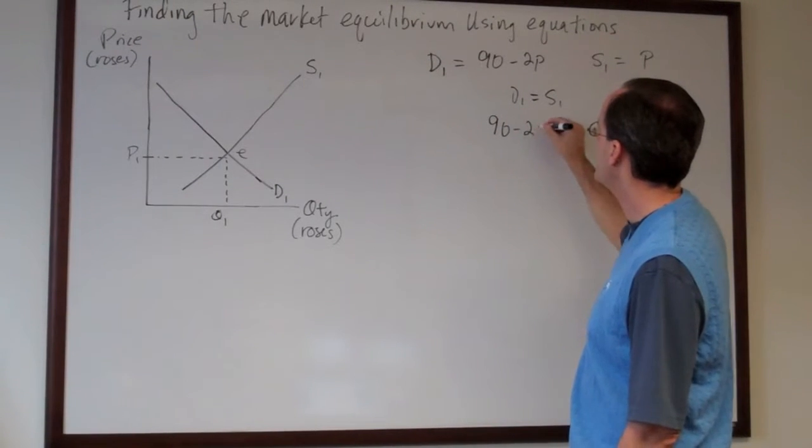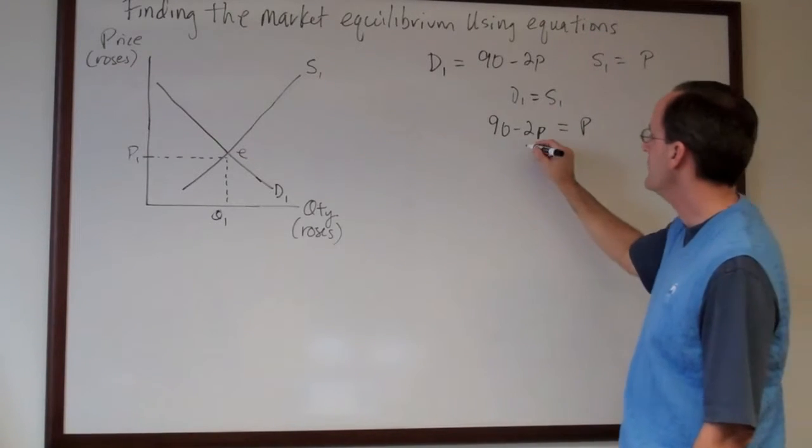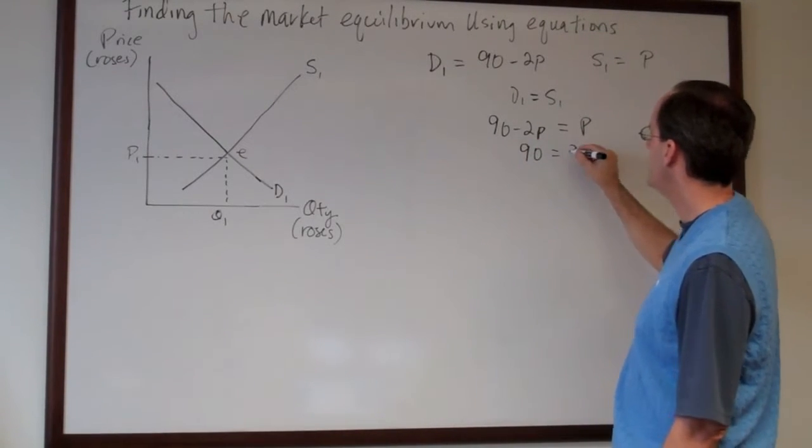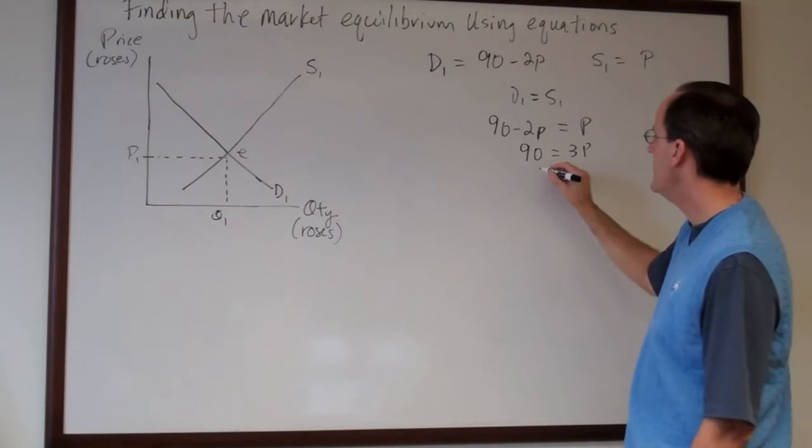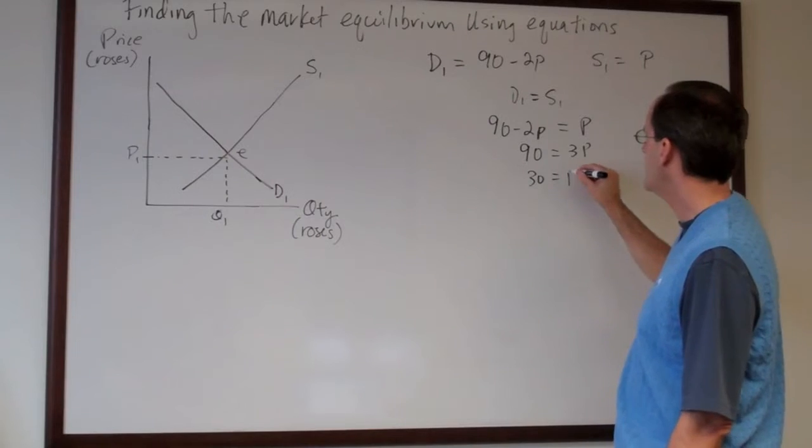That's ninety minus two P is equal to P. Collecting the terms we get ninety is equal to three P and then solving here divided by three we get the price should be thirty.